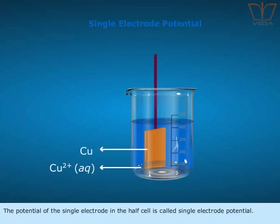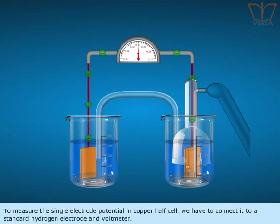The potential of the single electrode in the half cell is called single electrode potential. To measure the single electrode potential in copper half cell, we have to connect it to a standard hydrogen electrode and voltmeter.